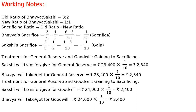First we will do the workings. Partners' old ratio — Bhavya and Sakhi — is 3:2. New ratio for Bhavya and Sakhi is 1:1. So sacrificing ratio equals old ratio minus new ratio. If the result is positive, it is a sacrifice; if negative, it is a gain.